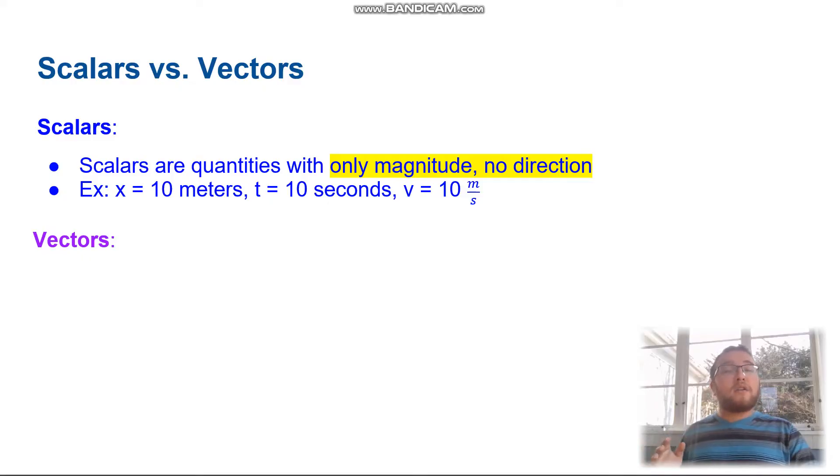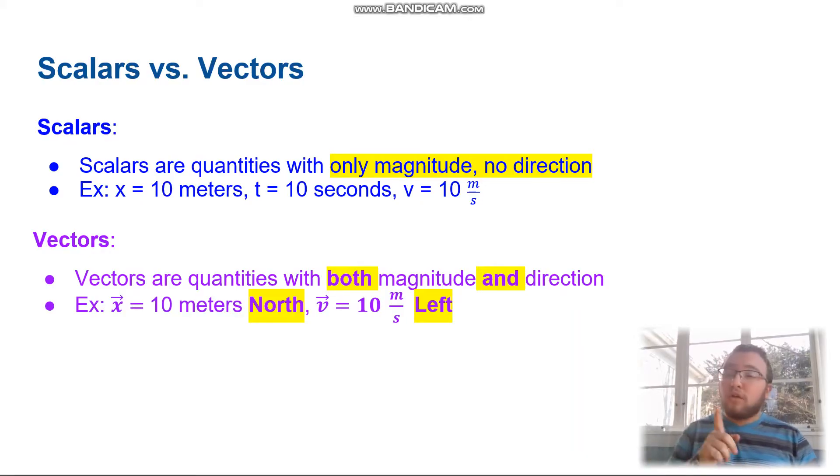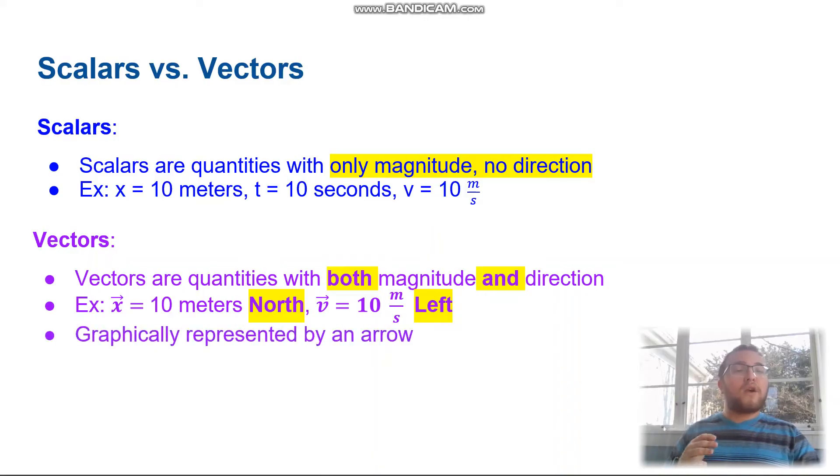The other end of that is vectors. If scalars don't have direction, then vectors are quantities with both magnitude and direction. So an example with that would be 10 meters to the north or 10 meters per second to the left. They are describing a direction as well as the size, the magnitude. And normally, we graphically represent these with an arrow.